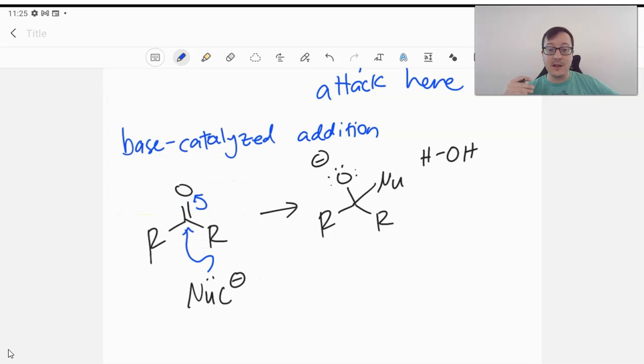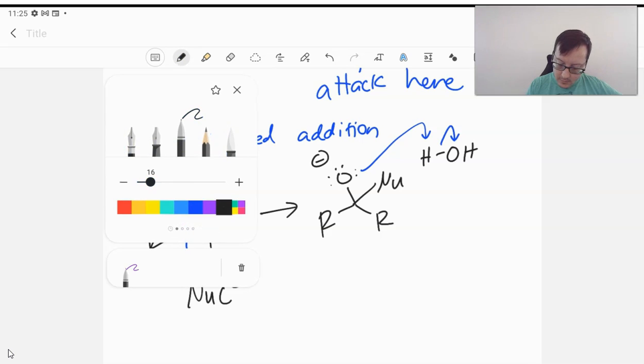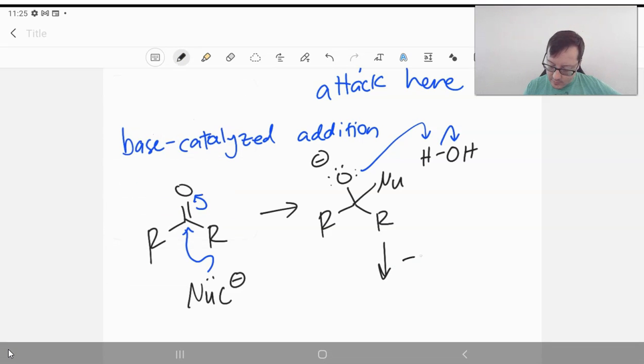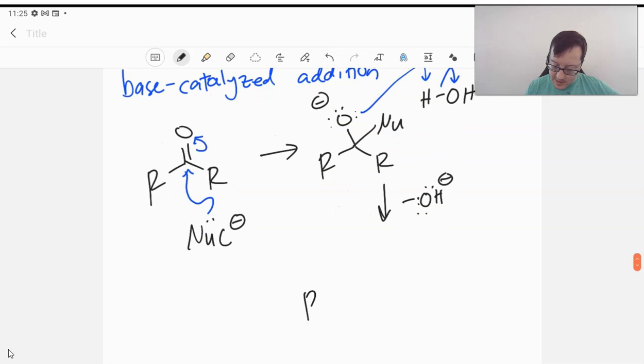So for example, after your Grignard attacks, you'll have this with the MgBr, which will be positive, that will be hanging on there, counterbalancing it. But once you do the water wash, mechanistically, we're going to have it grab a proton. We're going to lose more of our base, and we will end up now having our protonated species with our new nucleophile added, whatever that happens to be.